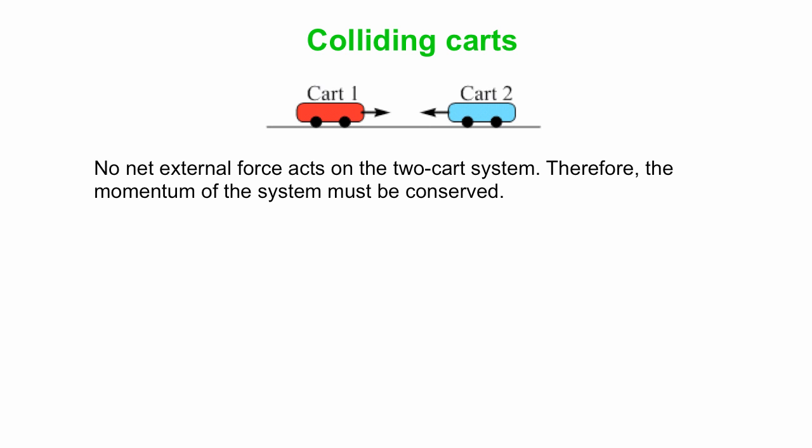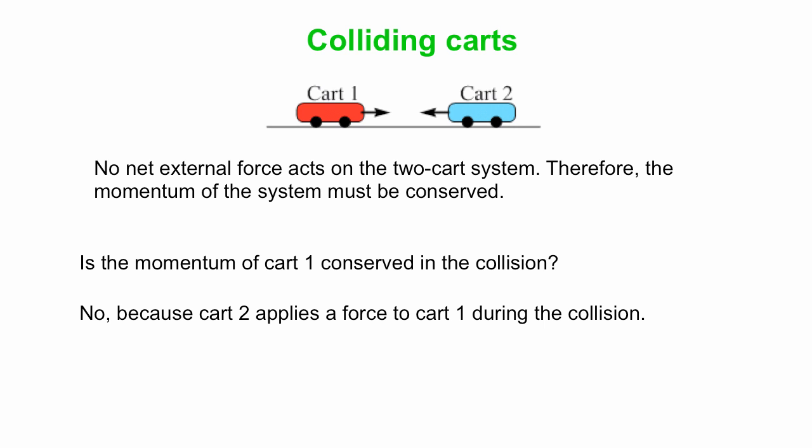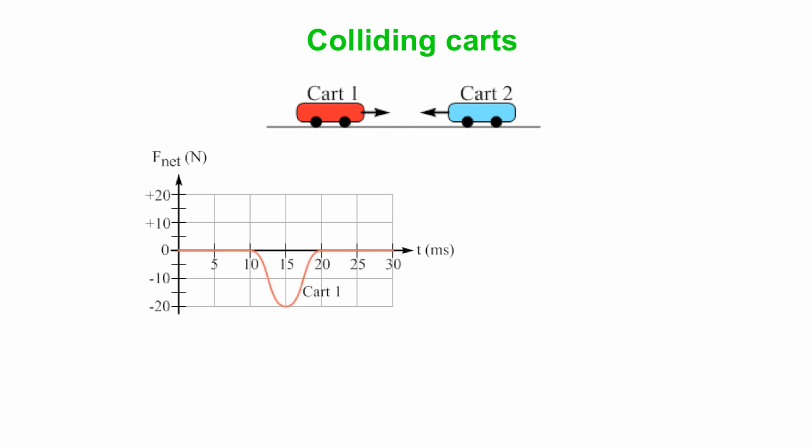No net external force acts on the two-cart system. Cart one has gravitational force and a normal force applied by the track - those are equal and opposite. Cart two, similar case. So if no net external force acts on this two-cart system, the momentum of the system must be conserved. Is the momentum of cart one conserved in the collision? No, it is not, because cart two will apply a force to cart one. Similarly, the momentum of cart two will change as well. But remember, the momentum of the system has to be conserved.